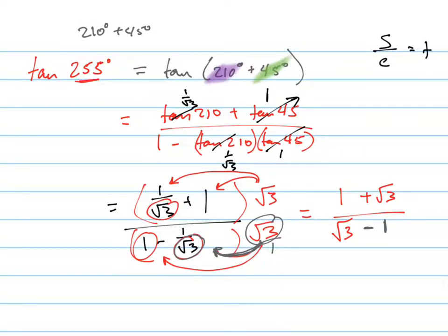Now your teacher might be okay with that as your final answer, or they might want you to simplify it because I have a radical in the denominator. So you're not quite done if they want you to simplify it more. Do you remember the trick for this? Multiply the top and bottom by root 3 plus 1, which is the conjugate of this. I just changed the sign there. But I'm going to have to do that on the top also.